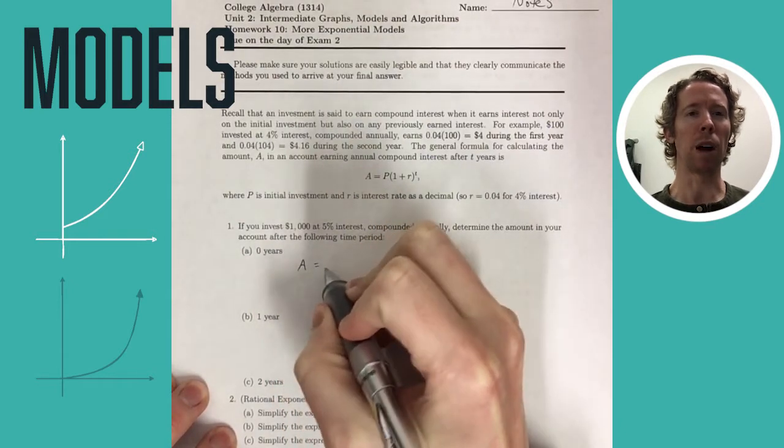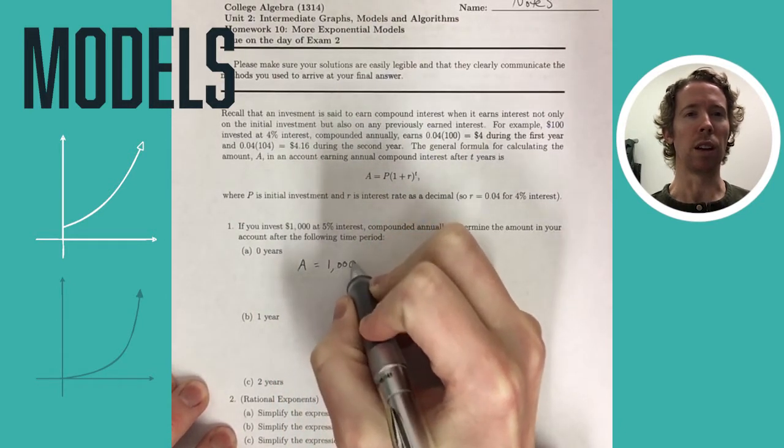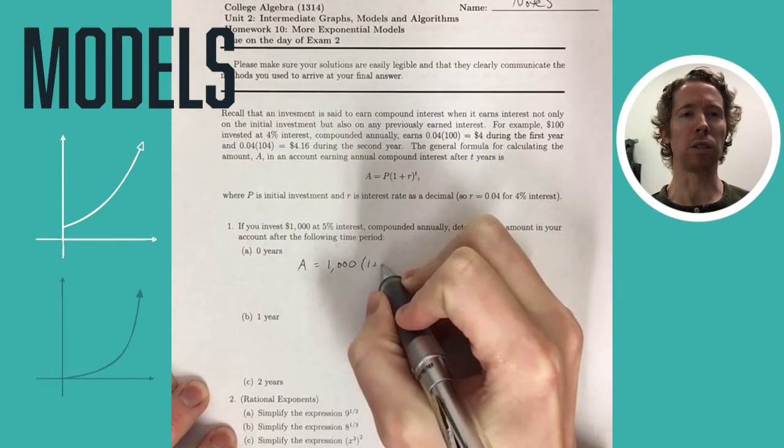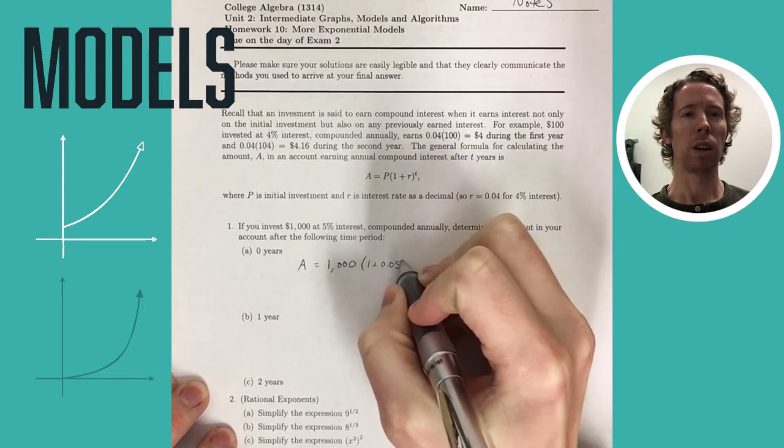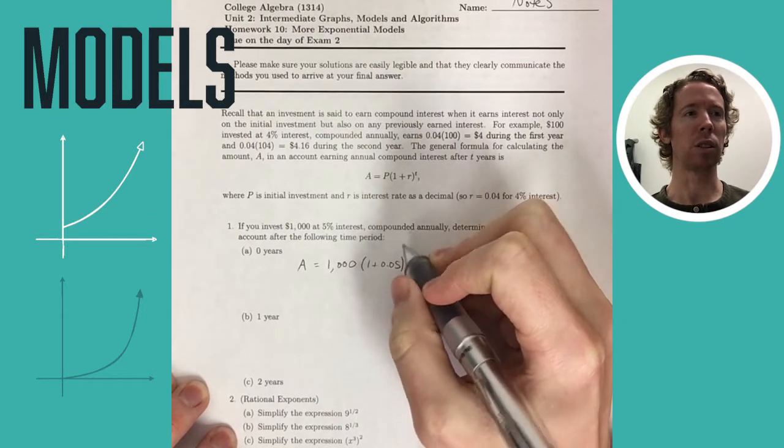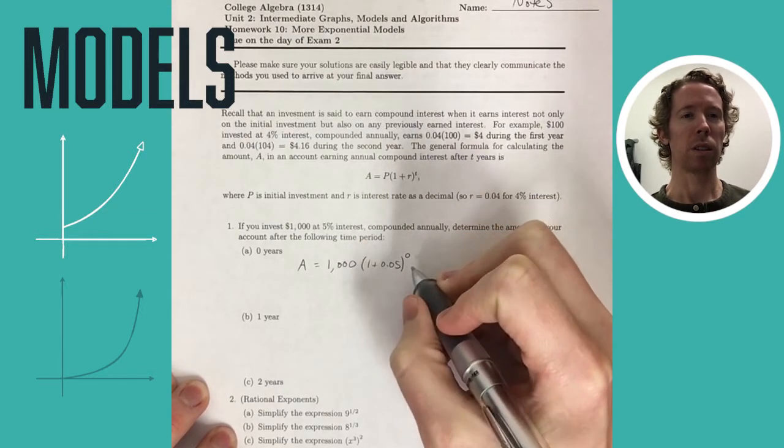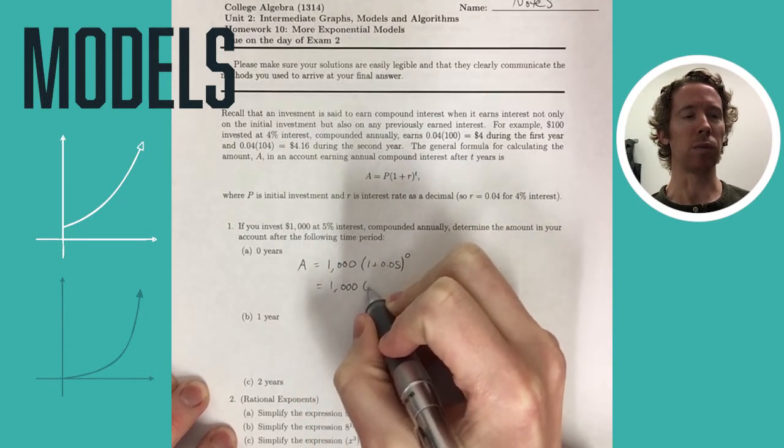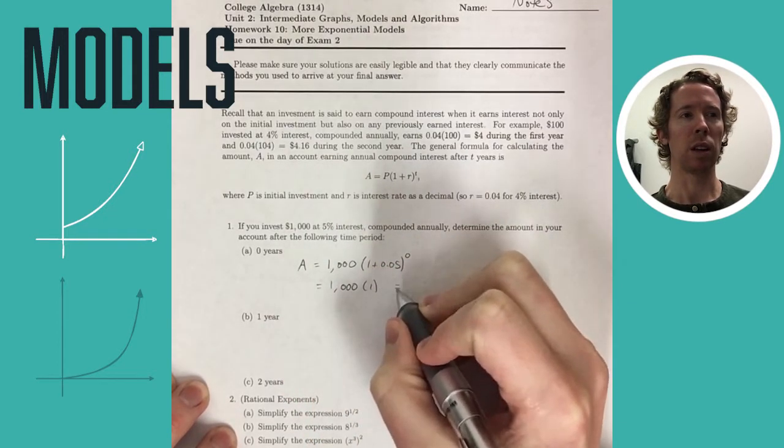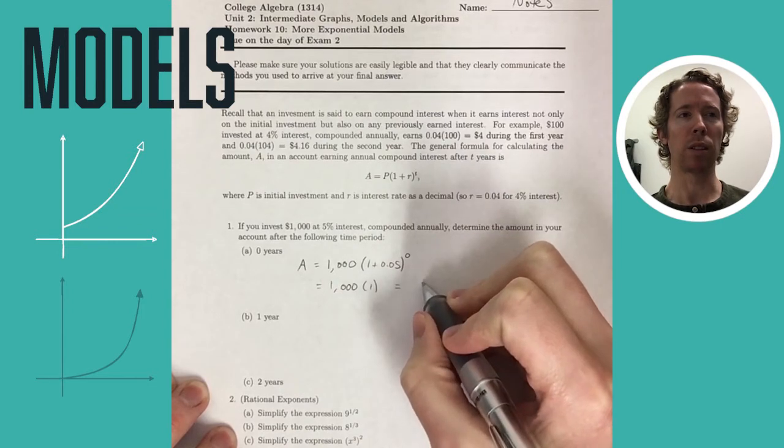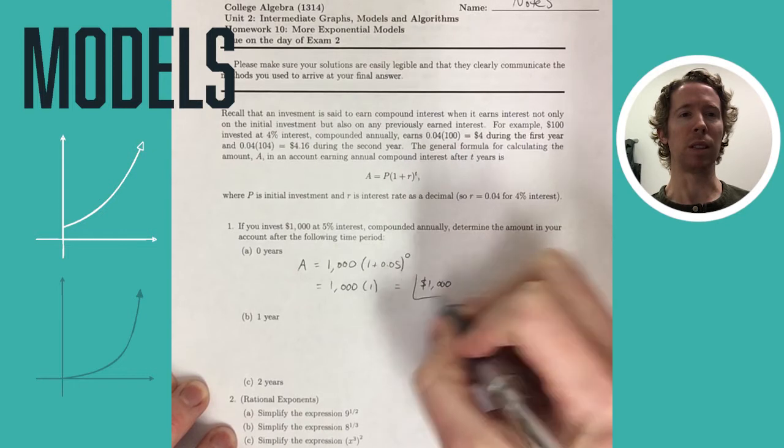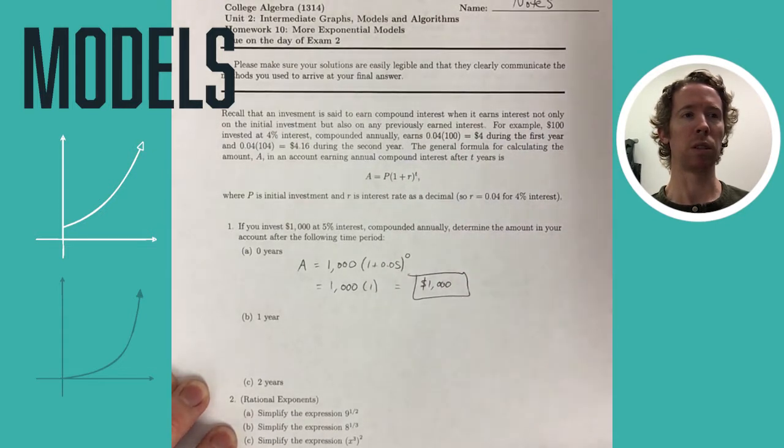If you have an investment earning compound interest, then there's a nice equation that goes along with that. It's not very hard to see where the equation comes from, and it's a nice, concise equation. It's the amount equals the amount that you initially invested, that's P here in the equation, times one plus the rate, the rate's written as a decimal, raised to the power of T, the number of years.